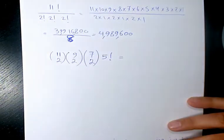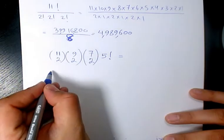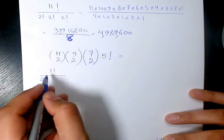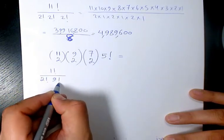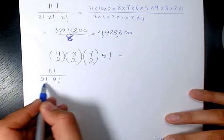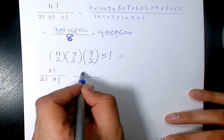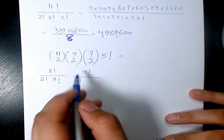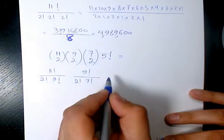Now if I expand this one, it's going to be 11 factorial divided by 2 factorial times 9 factorial, times 9 factorial divided by 2 factorial times 7 factorial, times 7 factorial divided by 2 factorial times 5 factorial, times 5 factorial.